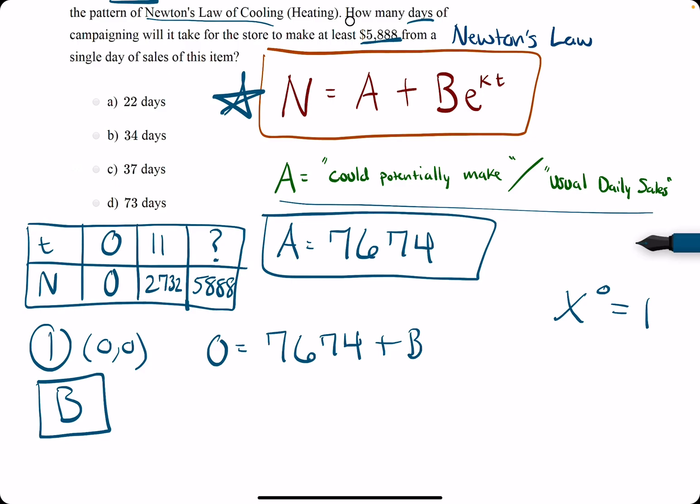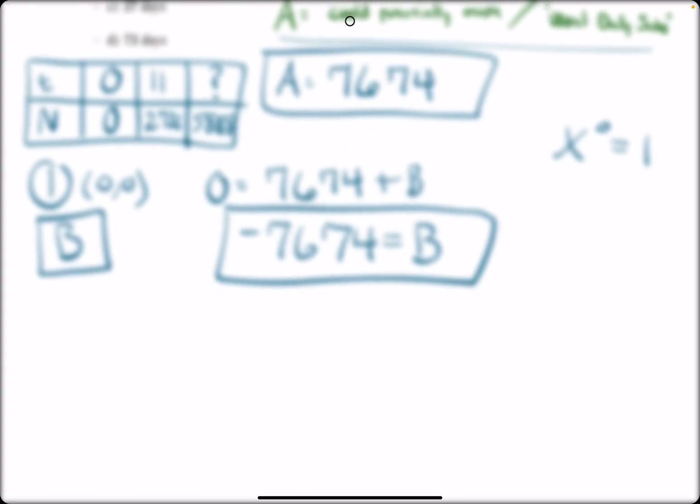But B times one is B. So we subtract 7674 to the left side, and we get B is negative 7674.